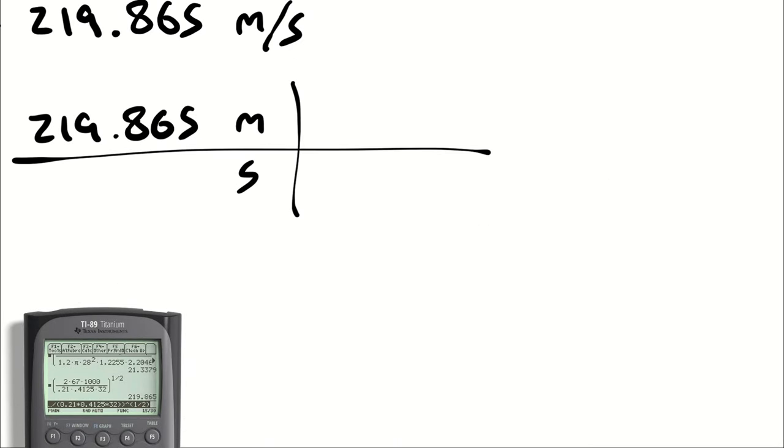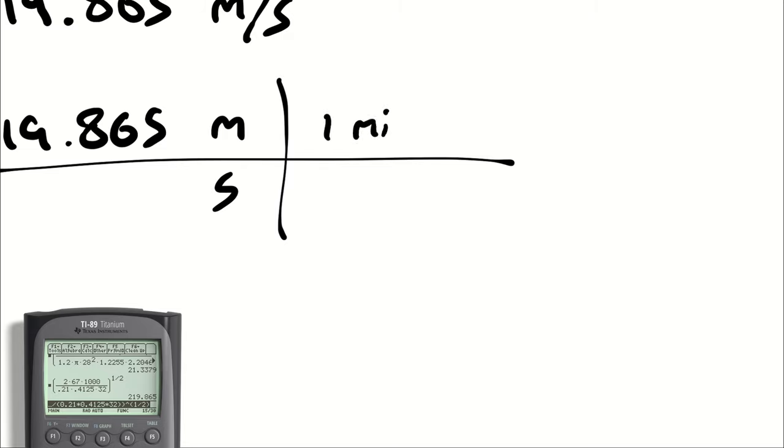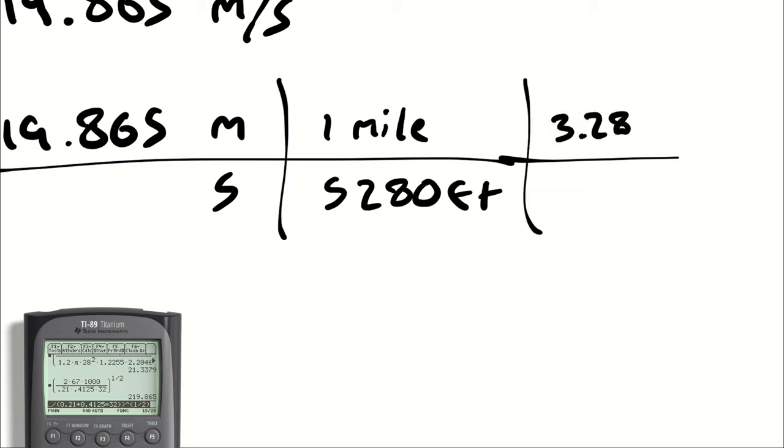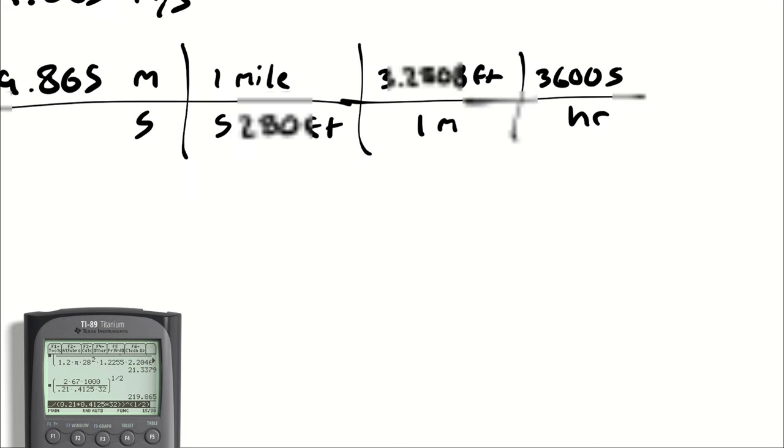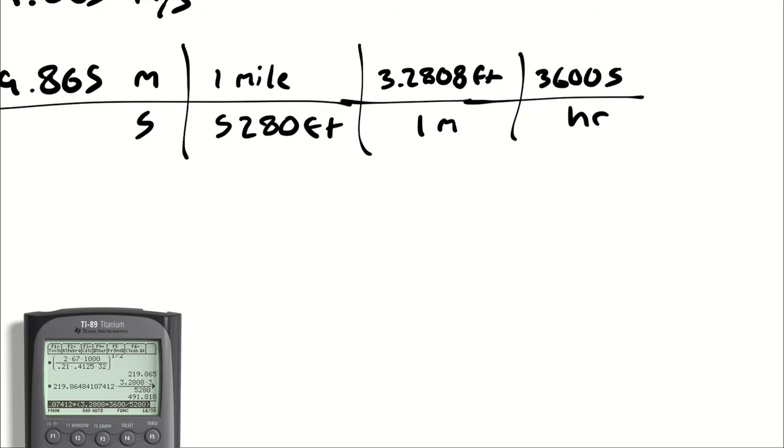A mile is 5280 feet, there are 3.2808 feet per meter, and 3600 seconds per hour. If I take that result and multiply it by 3.2808 times 3600 divided by 5280, we get 492 miles per hour.